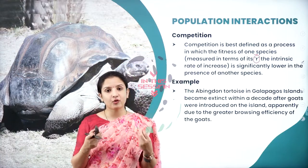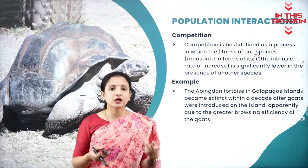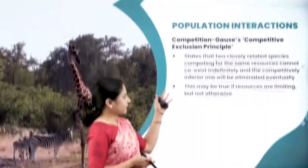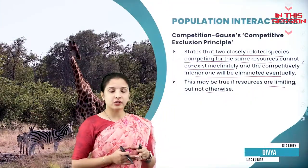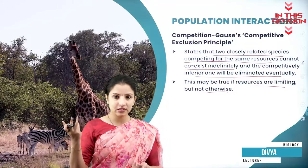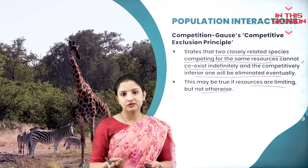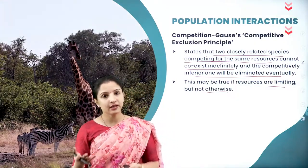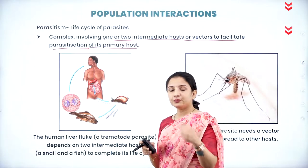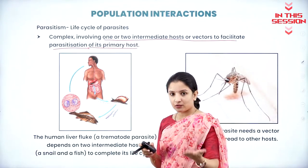How does the increase in the rate of population occur? It is because of the reproduction capability of the particular organism. Eventually, the superior competitive species will survive and the inferior competitive species might become extinct. If it has to complete its life cycle, the parasite needs a vector.